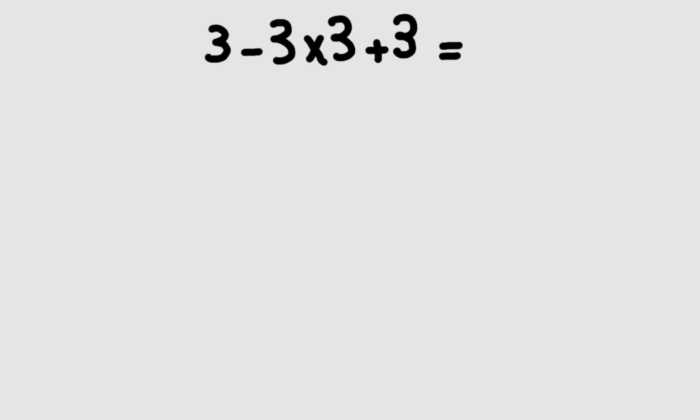Hey guys and welcome to this video. Today I want to find the value of this expression: 3 minus 3 times 3 plus 3. So 3 minus 3 gives us 0, and 0 times 3 gives us 0. Now 0 plus 3 gives us 3, but this answer is not correct according to the rules of mathematics.